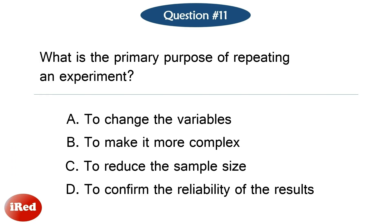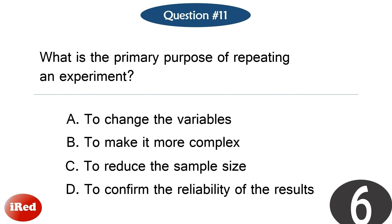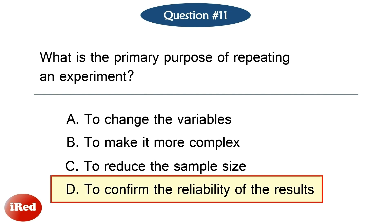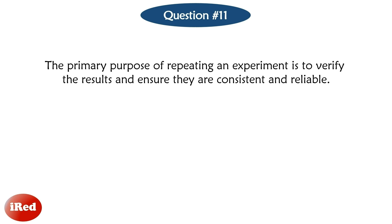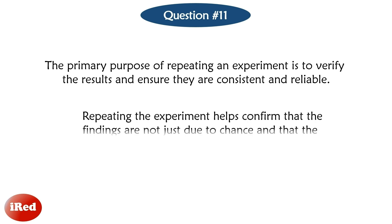Question number 11: What is the primary purpose of repeating an experiment? The correct answer is letter D. The primary purpose of repeating an experiment is to verify the results and ensure they are consistent and reliable. Repeating an experiment helps confirm that the findings are not just due to chance and that the results can be trusted.